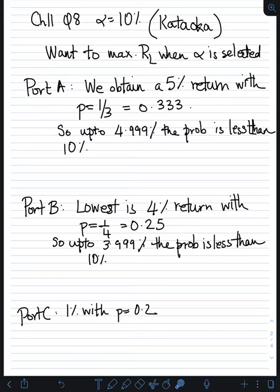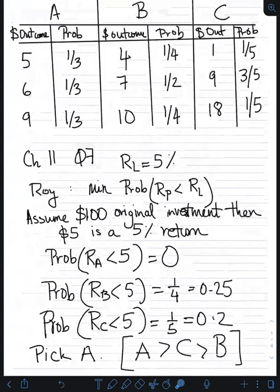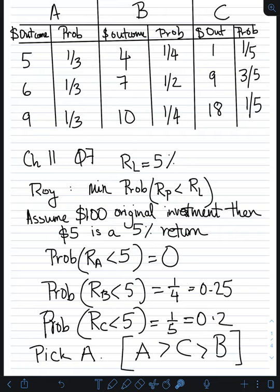Now for problem 8: if alpha equals 10%, what is the preferred investment shown in problem 1 using Karaoka's safety-first criterion? We're still using the same table. With alpha equal to 10%, we want to lock in the 10% cutoff for our bad outcomes, then find the portfolio that gives us the highest lower bound based on that 10% lock. The lowest returns we can get from our portfolios are 5% for A, 4% for B, and 1% for C. But notice these probabilities are one-third, one-fourth, and one-fifth — not 10%.